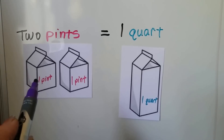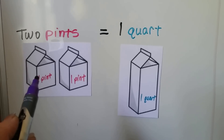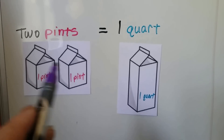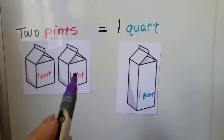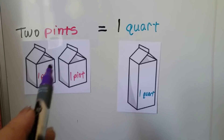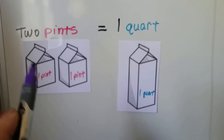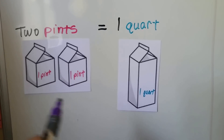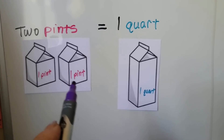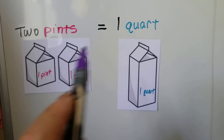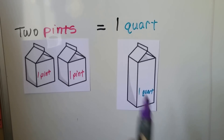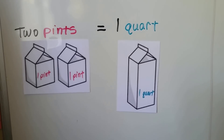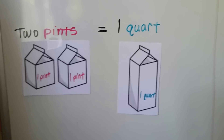If one pint is two cups, then wouldn't four cups fill a quart? That's two cups and that's two cups. Two plus two is four. That means four cups would go into one quart.